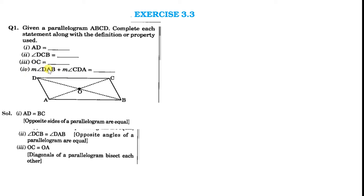Next is measure of angle DAB plus measure of angle CBA. DAB is this angle plus CBA means this angle. Since these are consecutive angles, their sum will be equal to 180 degrees, because we know that adjacent angles of a parallelogram are supplementary.